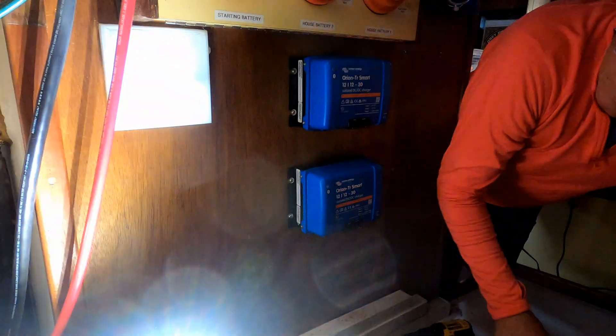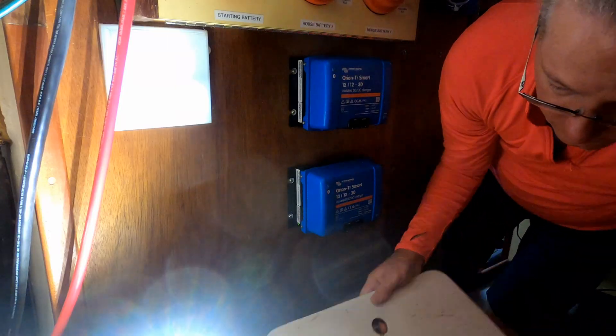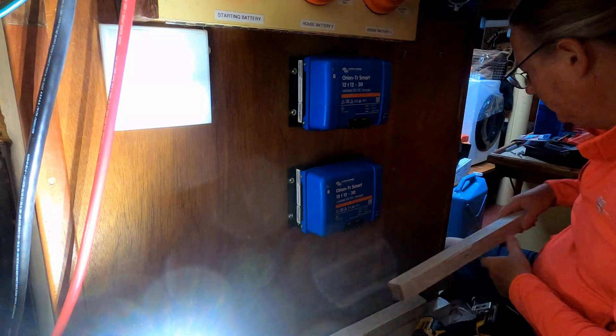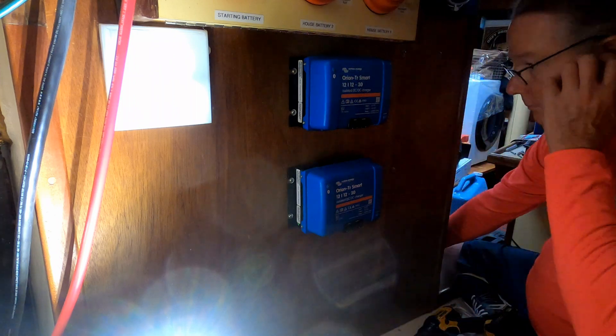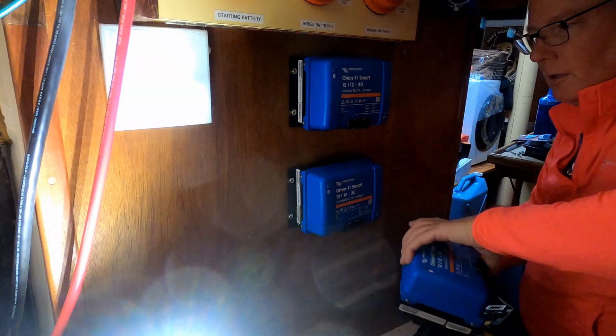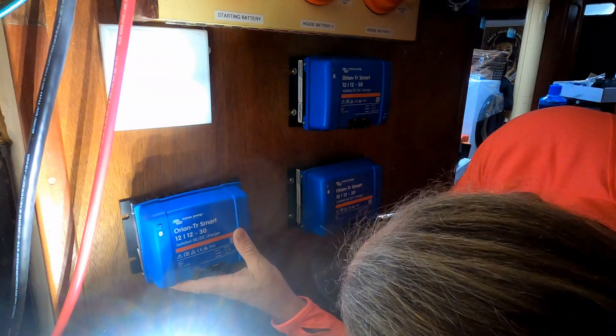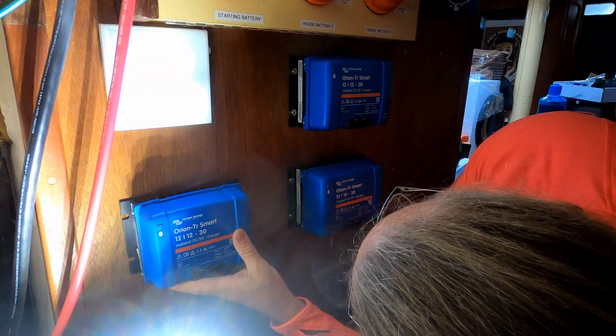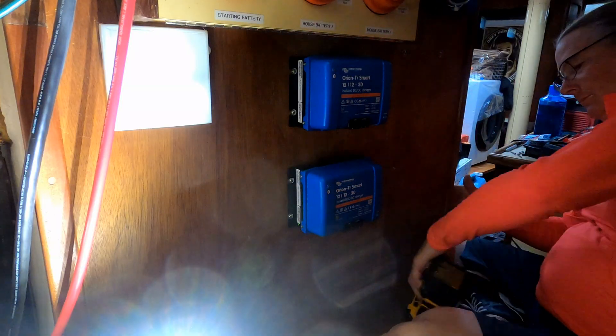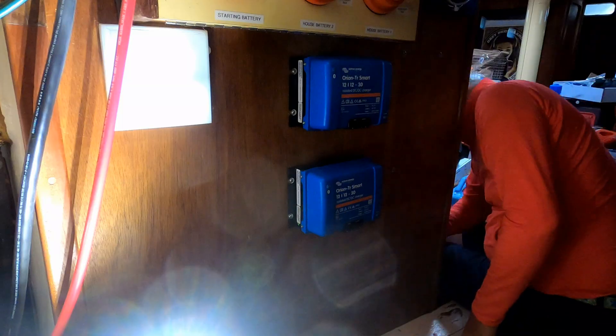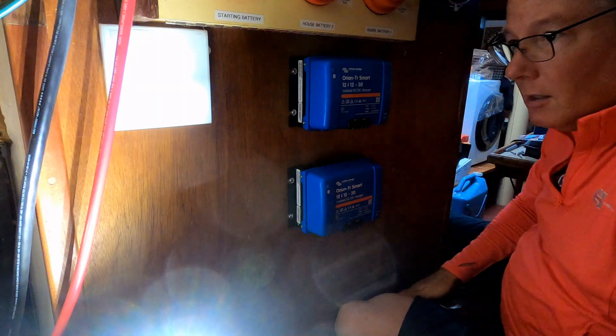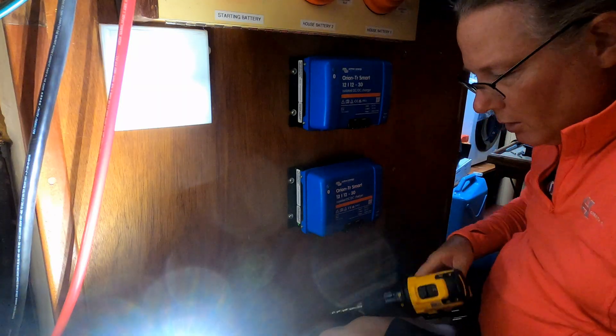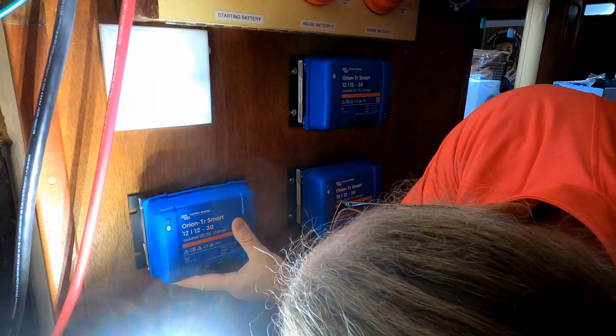I think a logical place to start is to take a step back and go over a couple of things. When I bought El Jaleo, she came with four or five lead acid batteries, I believe 100 amp hours, one was 120 amp hours. I wanted to upgrade those to lithium iron phosphate batteries. Lead acid batteries are very heavy; lithium iron phosphate batteries are very light, only about 40% of what a lead acid battery weighs. Lead acid batteries, you do need to maintain them, water them. With lithium iron phosphate, there is no maintenance.